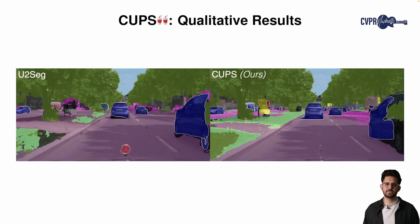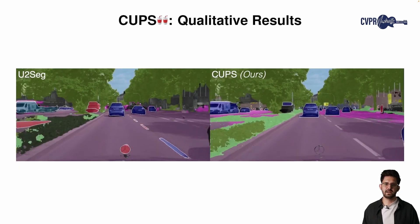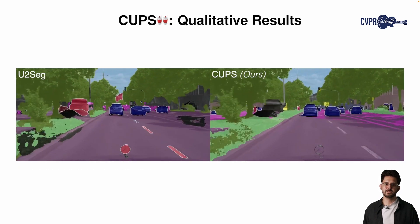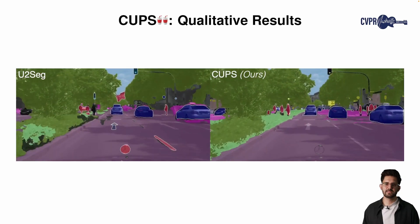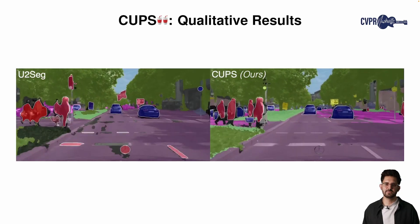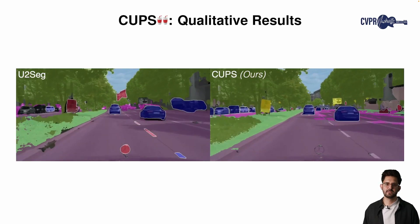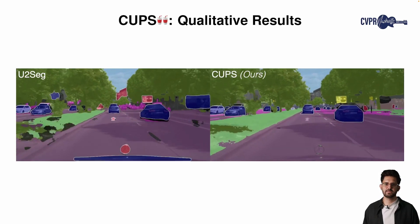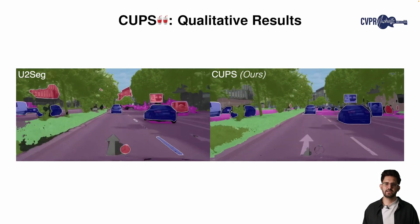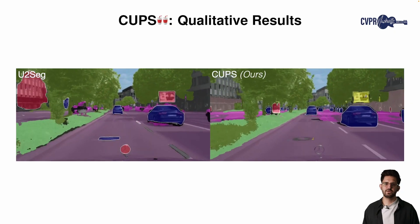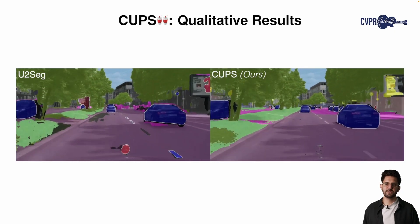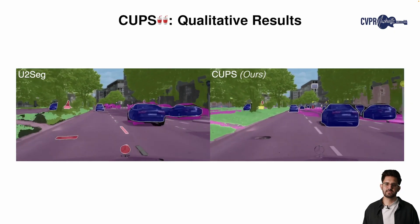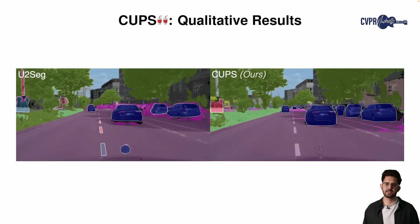Qualitatively, we observed that CUPS discovers a large number of instances and accurately detects and segments small and distant objects. CUPS suffers from fewer artifacts and fewer wrong predictions, while being more temporally consistent compared to U2SEC.